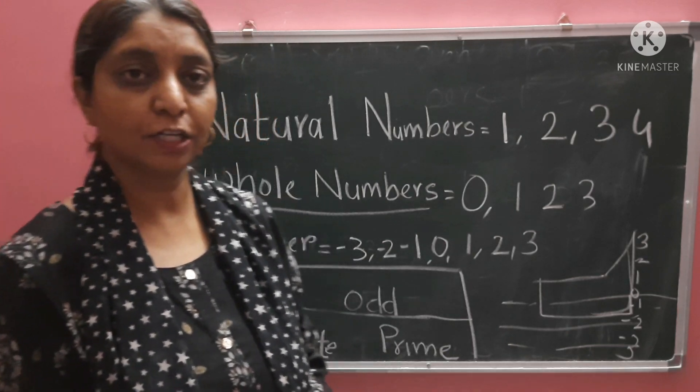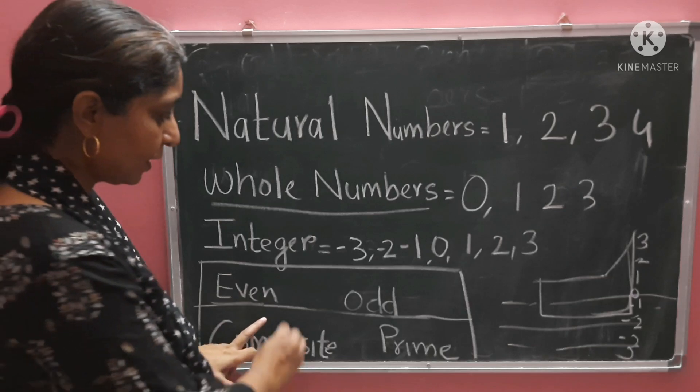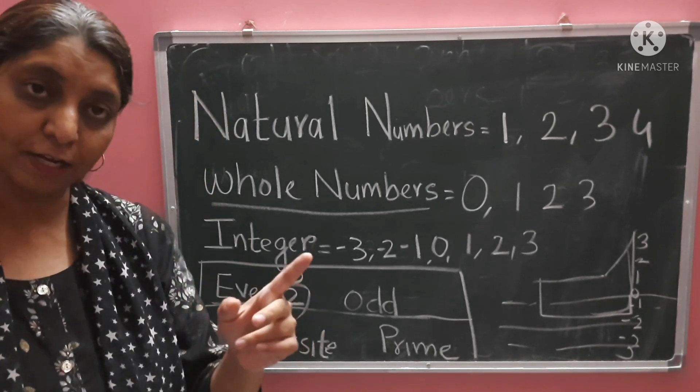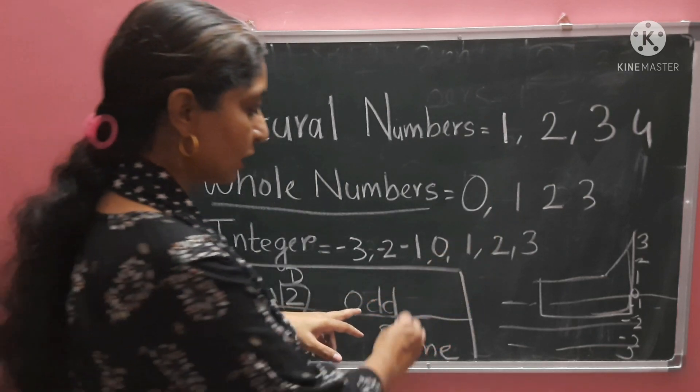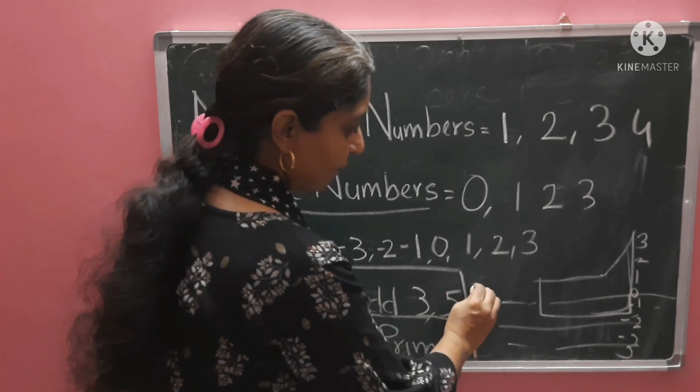Then, we have seen in the last video, what are even and odd numbers? Even numbers are divisible by 2. Numbers that divide by 2 are called even. Odd numbers don't divide by 2, like 3, 5, 7.